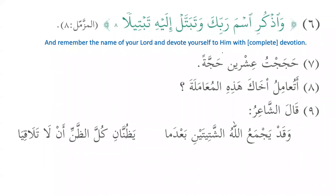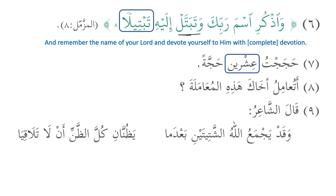In the verse: wadhkurisma rabbika watabattal ilayhi tabatila — here tabatila is the naib al-masdar. We know that batala yubattilu tabatilan; this is form number two and tabatilan is the masdar.